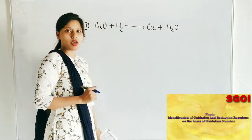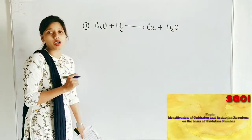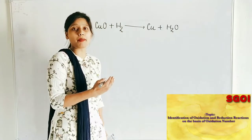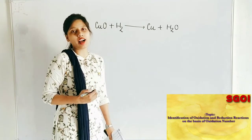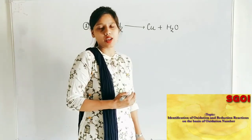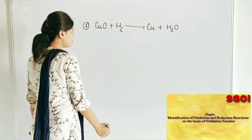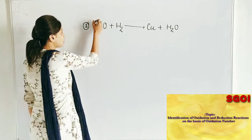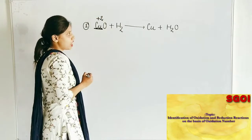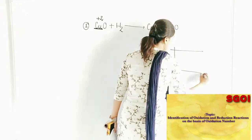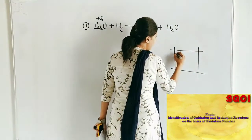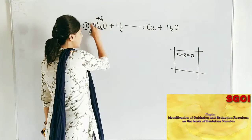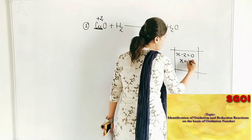Now let's check how this reaction is redox. For CuO, let the oxidation number of Cu be X, and for O we use minus 2. Since it is a neutral compound, X plus minus 2 equals 0, so X is equal to plus 2.